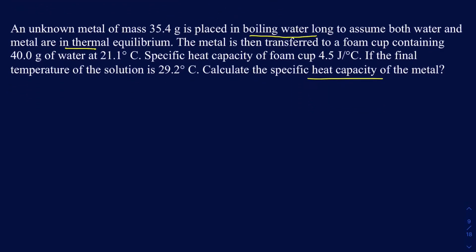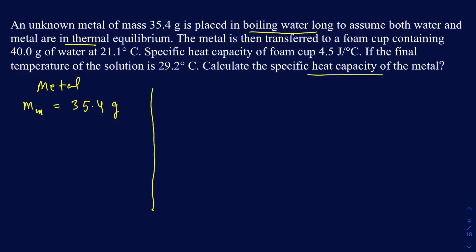There are actually three things going on in this question. First, I'll write down the metal side. On the metal side, we're given the mass of the metal, which is 35.4 grams. Since it's being placed in boiling water, the initial temperature of the metal is going to be 100 degrees Celsius.